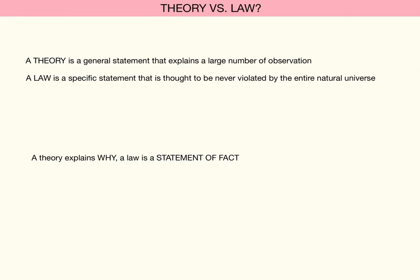You've also heard of a law. So the difference between a theory and a law—it's kind of a soft difference, but generally speaking, a theory is a general statement that explains a large number of observations. A law, on the other hand, is a specific statement that is never violated in the natural universe.